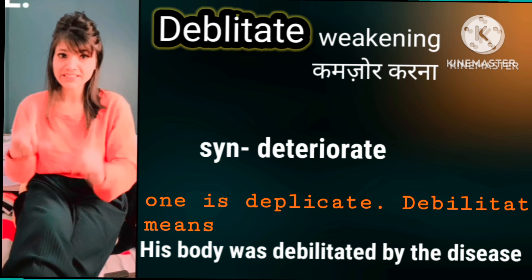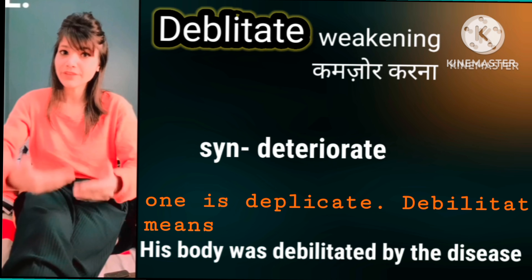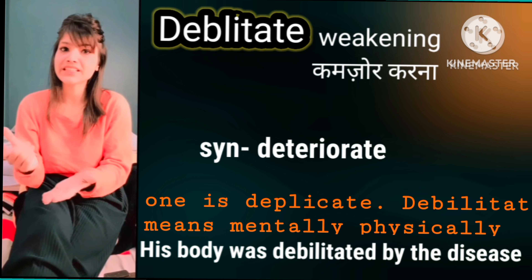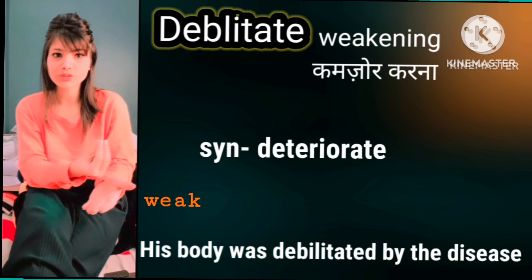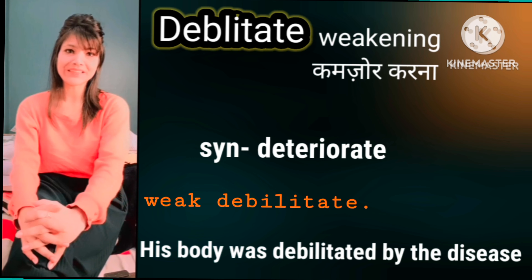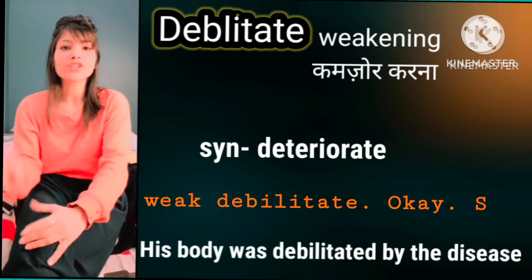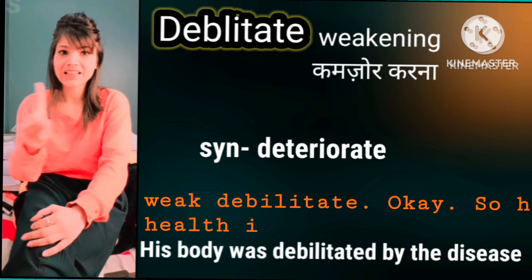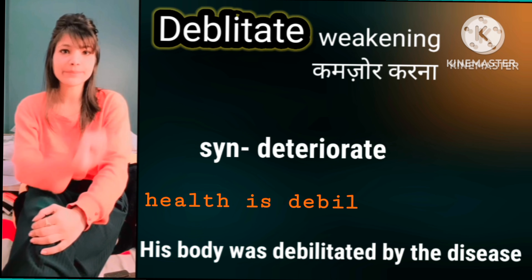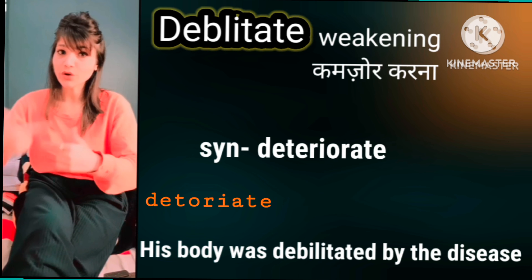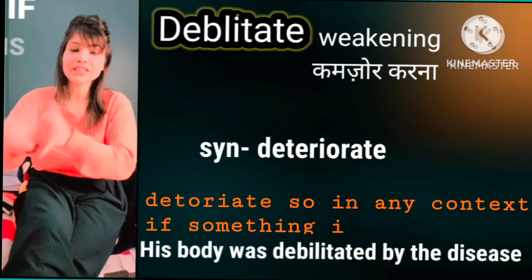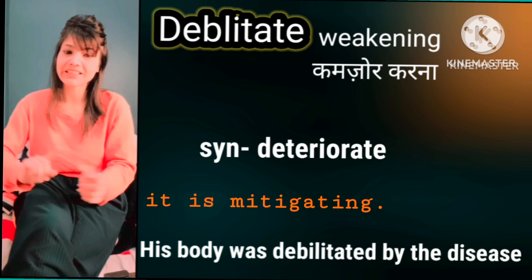So here I'm going to mention a few words. The first one is 'debilitate.' Debilitate means kisi cheez ka lesser hona, weak hona — if someone is mentally or physically weak, kamzor hota hai, then we call that debilitate. For example: his health is debilitating, her health is debilitating.